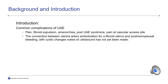Extensive literature review for complications of uterine artery embolization returned with what is commonly known, such as pain, fibroid expulsion, amenorrhea, post-UAE syndrome, and pain at the vascular access site. The connection between uterine artery embolization for a fibroid uterus with submucosal components and post-menopausal bleeding, with cystic changes noted on ultrasound, has not yet been made. The goal of this case series is to describe the sonographic findings in patients with post-menopausal bleeding after UAE for submucosal fibroids.